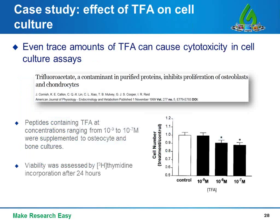As a case study, a publication investigating the effect of TFA on cytotoxicity in culture found that high levels of TFA inhibit proliferation of osteoblasts and chondrocytes. The figure shows the influence of TFA concentration in cell culture on cell number. The data suggests that TFA concentrations exceeding the nanomolar range decrease cell growth in osteoblast and chondrocyte cultures. In short, TFA and endotoxin are two main factors that might cause toxicity in your experiment.